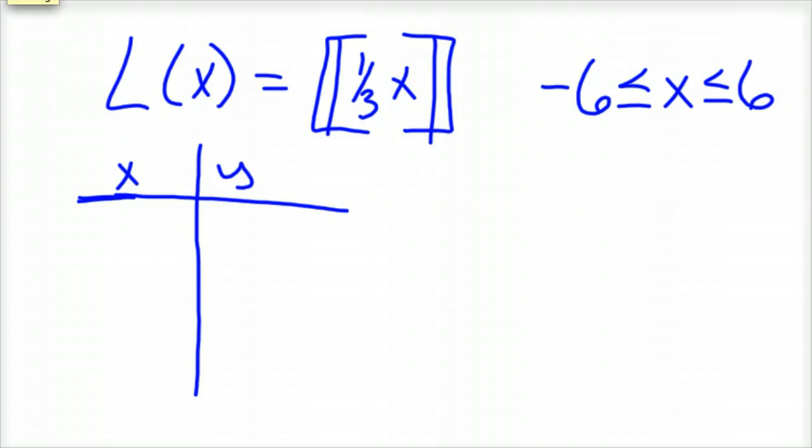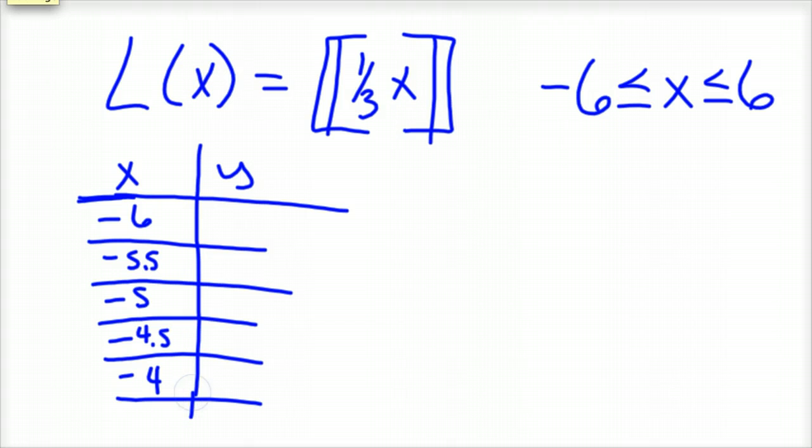So here's my X values, here's my Y values. So negative 6, negative 5.5, and I'll just go by halves so you can kind of see what's happening. Negative 5, negative 4.5, negative 4, and we'll stop there for right now.